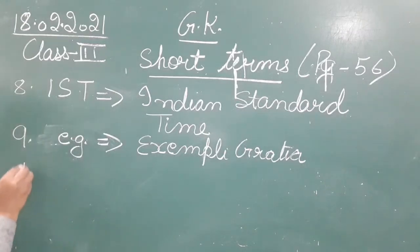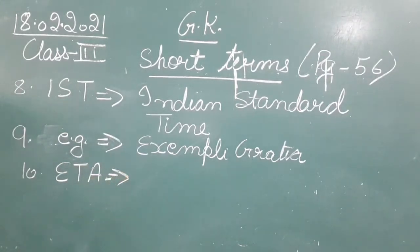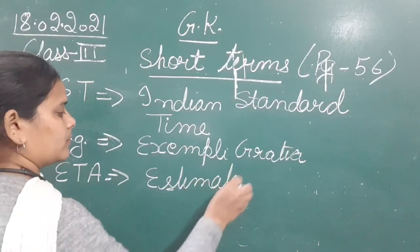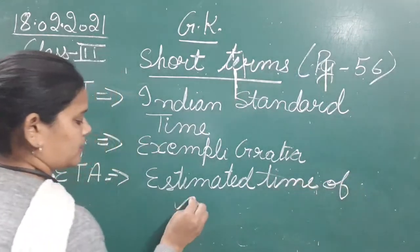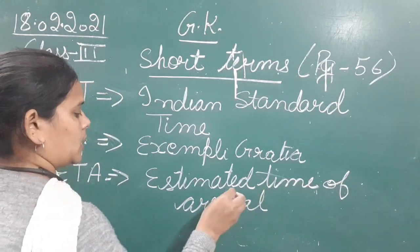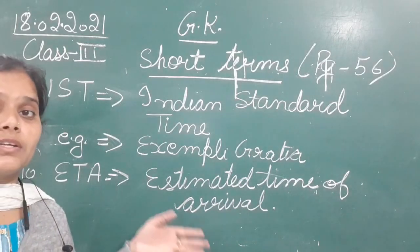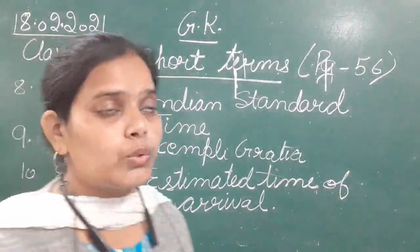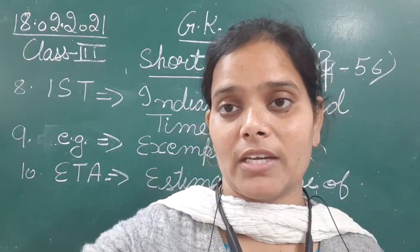Then the last one is ETA. The full form of ETA is 'Estimated Time of Arrival'. This is commonly used with train tickets or flight tickets — ETA refers to the estimated time when the train or plane will arrive. So this was from page number 56. With this, I am ending the session here. I will see you again very soon in our next session. Till then, everybody have a great day. Thank you.